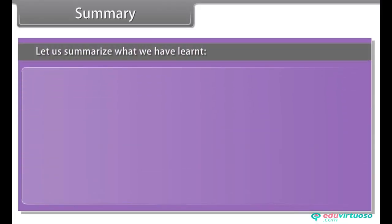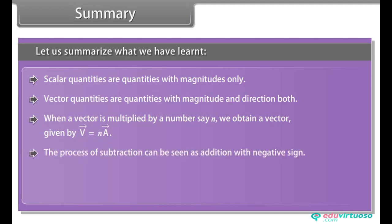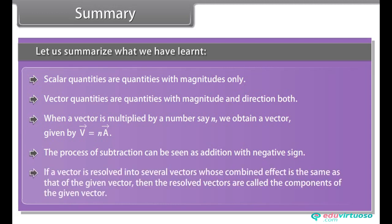Summary. Let us summarize what we have learned. Scalar quantities are quantities with magnitudes only. Vector quantities are quantities with magnitude and direction both. When a vector a is multiplied by a number say n, we obtain a vector v given by v vector is equal to n into a vector. The process of subtraction can be seen as addition with negative sign. If a vector is resolved into several vectors whose combined effect is same as that of the given vector, then the resolved vectors are called the components of the given vector.